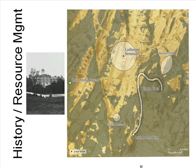This is a map of viewshed — basically the areas that can be seen from the top of the Lutheran seminary where General Lee spent the first day of the Battle of Gettysburg. The lighter areas are those he could actually see from up there. The analysis was based on historical maps as well as existing topography and trees. The darker areas are thought to be areas he couldn't see, and the lighter areas he could.